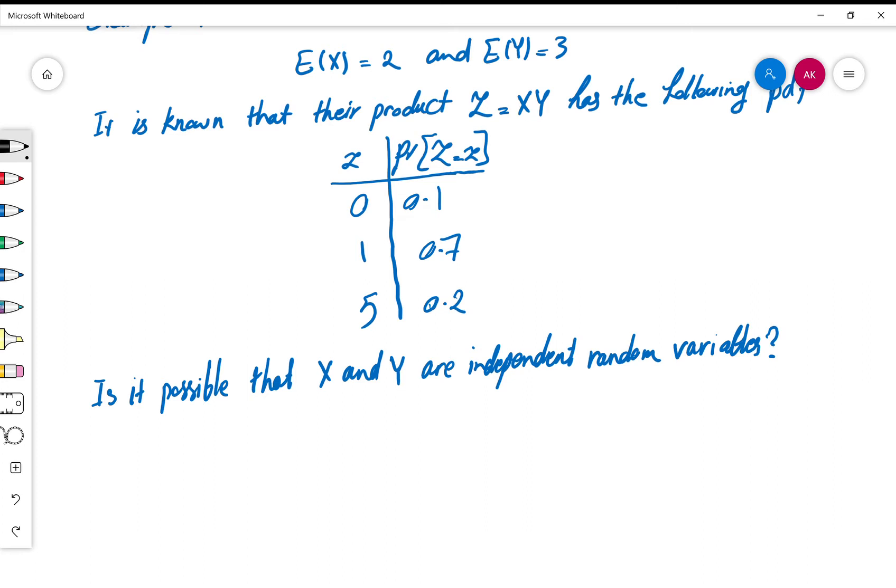Well, you have seen in previous videos that if two random variables are independent, as a result—so let me just recall this—if X and Y are independent, then we can say that E(XY) is equal to E(X) times E(Y).